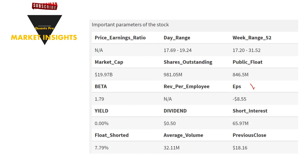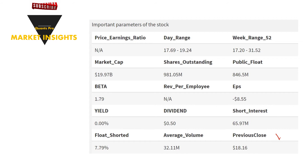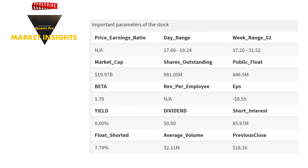The EPS value, which is an important index, is minus 8.55. The market capitalization value, which expresses the weight of the company's performance in the market, is $19.97 billion. Public float value is also approximately 846.5 million. The stock of the company closed at 18.16 with an average volume of 32.11 million. While the stock oscillated in the range of 17.69 to 19.24 during the day, the 52-week movement range was 17.20 to 31.52.